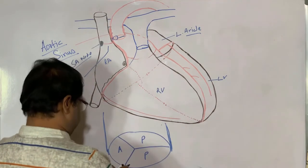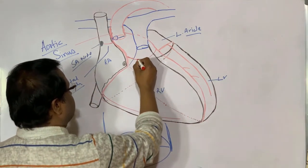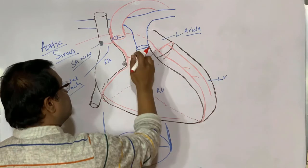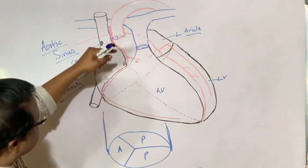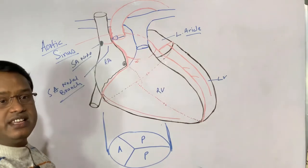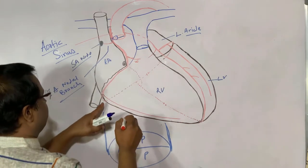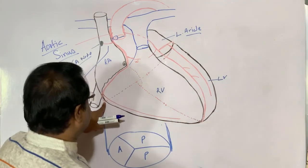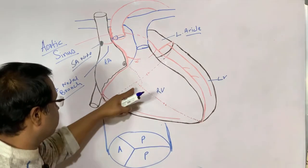The second branch the right coronary artery gives is the conus artery — the right conus artery. On the left side, the left coronary artery also gives a left conus artery, and these two conus arteries anastomose with each other.